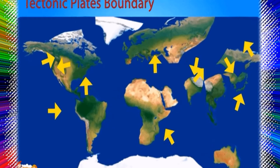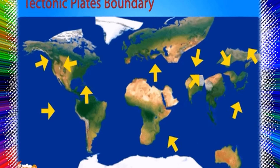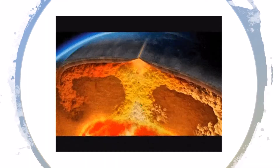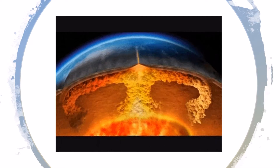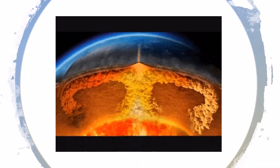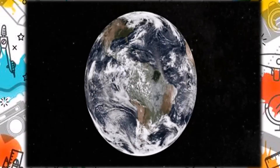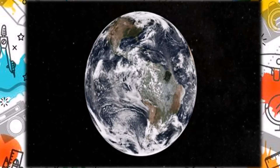As Britannica.com defines it, plate tectonics is a theory dealing with the dynamics of Earth's outer shell — the lithosphere — that revolutionized Earth sciences by providing a uniform context for understanding mountain building processes, volcanoes, and earthquakes, as well as the evolution of Earth's surface and reconstructing its past continents and oceans.